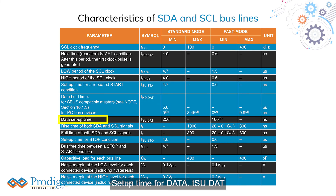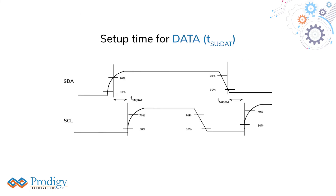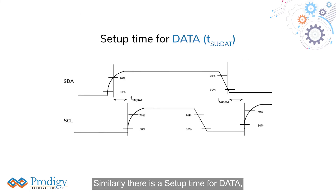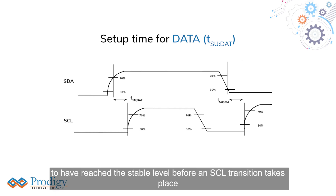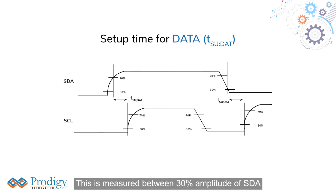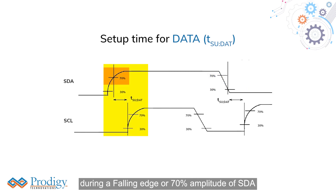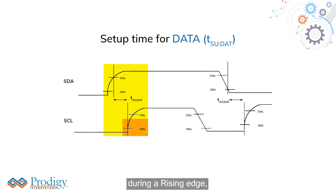Setup Time for Data, TSU DAT: Similarly, there is a setup time for data, which is defined as the minimum amount of time required for SDA to have reached a stable level before an SCL transition takes place. This is measured between 30% amplitude of SDA during a falling edge, or 70% amplitude of SDA during a rising edge, and 30% amplitude of SCL during a rising edge.